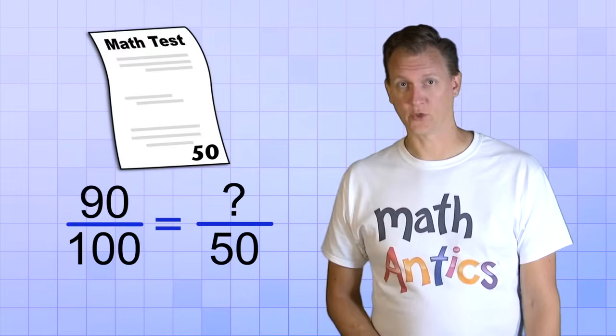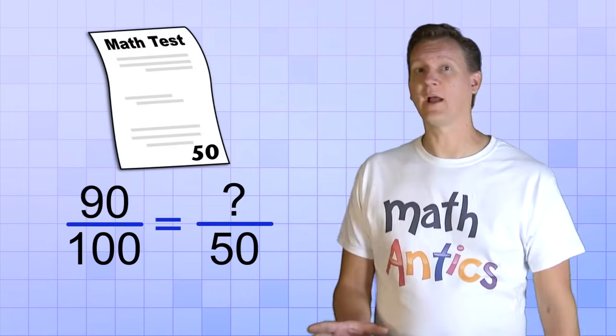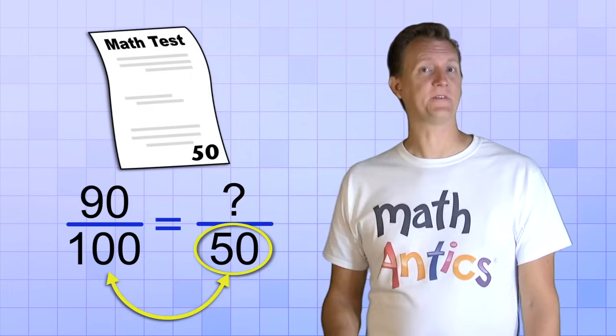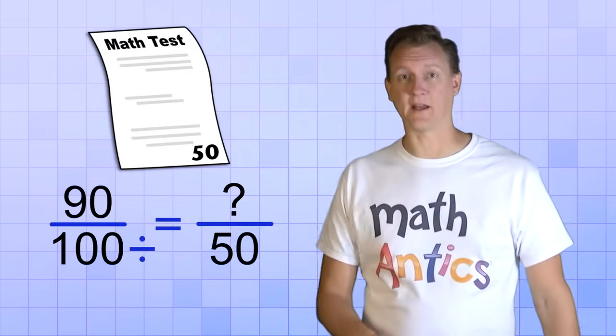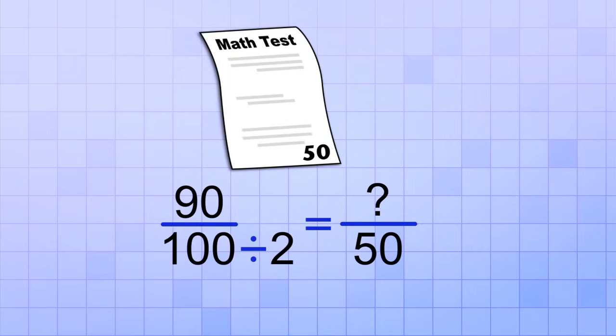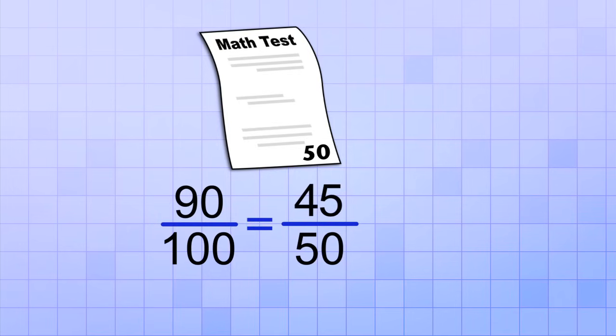And now that we know how to do that, we can figure out what our actual test score was. Notice the relationship between our fraction's bottom numbers. 50 is exactly half of 100. So we could go from 100 to 50 by dividing by 2. And that means, if we do the same thing to the top number, divided by 2, we'll get the top number of the equivalent fraction. And since 90 divided by 2 is 45, 45 over 50 is equivalent to 90 over 100. And now we know that our actual test score must have been 45 out of 50.